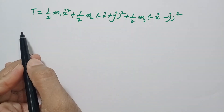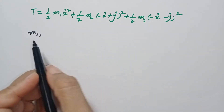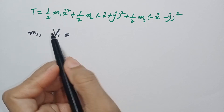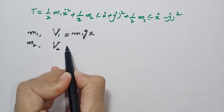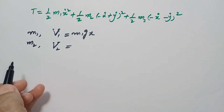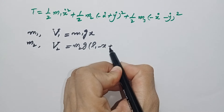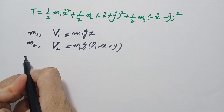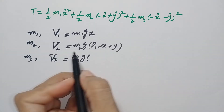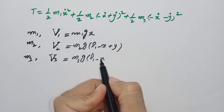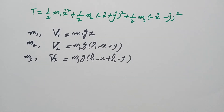The potential energy of mass m1 will be V1 = m1g·x. The potential energy of mass m2 will be V2 = m2g(l1 − x + y). Similarly, the potential energy of mass m3 will be V3 = m3g(l1 − x + l2 − y).